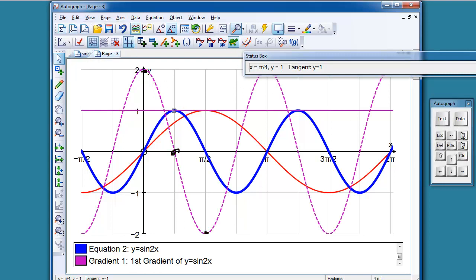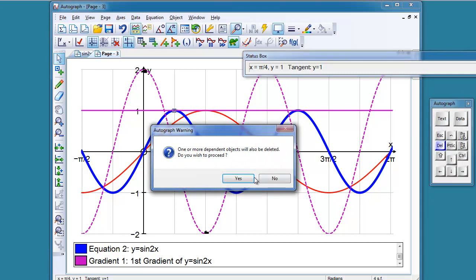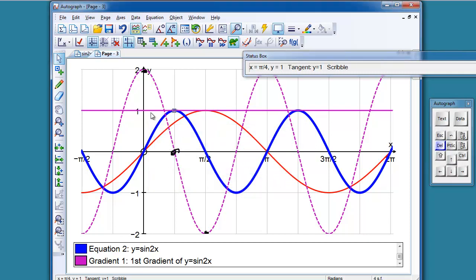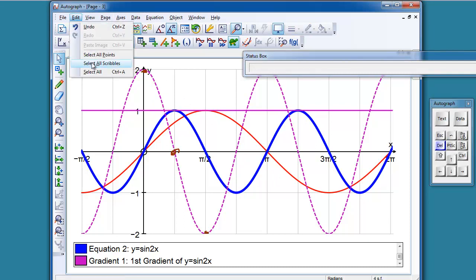Edit, select all scribbles and delete. Tidy that up. Looks like we've got something else selected. So deselect that. The point's there. So I'm going to leave that for now and edit, select all scribbles and delete.